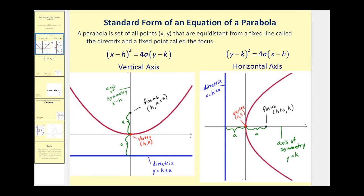Let's do a quick review from the last video. If we have a parabola in standard form where the x part is being squared, we are going to have a vertical axis as pictured here on the left, where h, k will be the vertex, and the value of a will tell us the distance from the vertex to the focus and also the distance from the vertex to the directrix. That will be enough information to find the coordinates of the focus and the equation of the directrix. The latus rectum is parallel to the directrix passing through the focus.